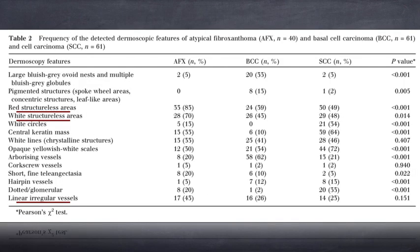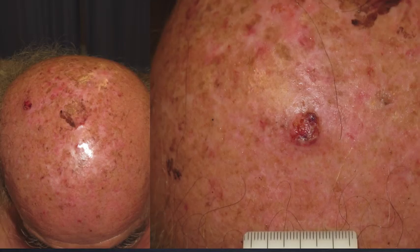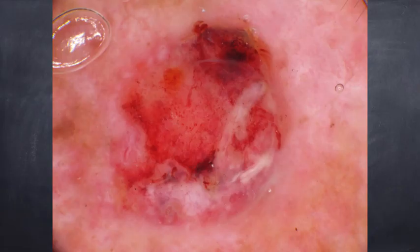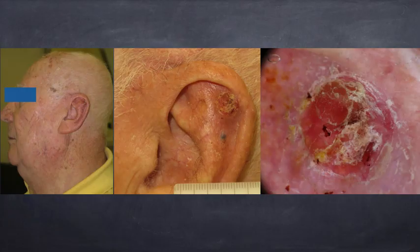From a dermoscopic point of view, red structureless areas, white structureless areas, and linear irregular vessels were the most common features found in AFX — so non-specific features under dermoscopy. These are some examples from our collection: nodular tumors on sun-exposed areas on extremely sun-damaged skin, showing linear irregular vessels, white structureless areas, and in some cases ulcerated tumors.